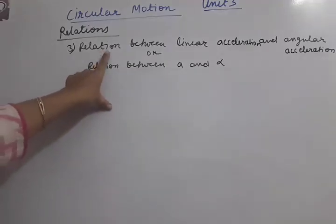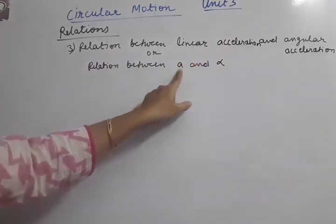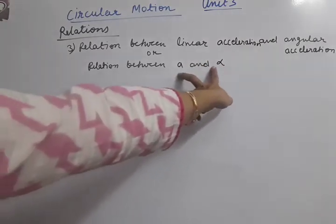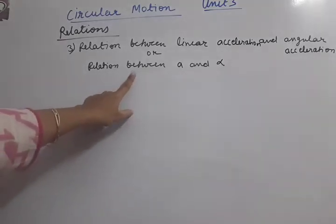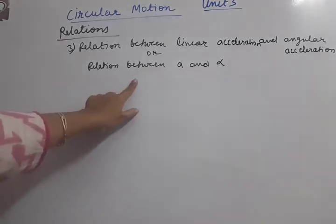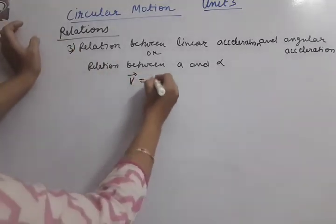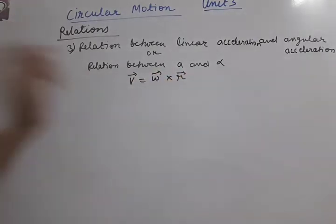Now we have to understand the third relation - the relation between linear acceleration 'a' and angular acceleration 'alpha'. We need to establish the relation between these two. To start, we will take the help of the velocity relation which we derived in the last session. Let us write some required formulas at the side.